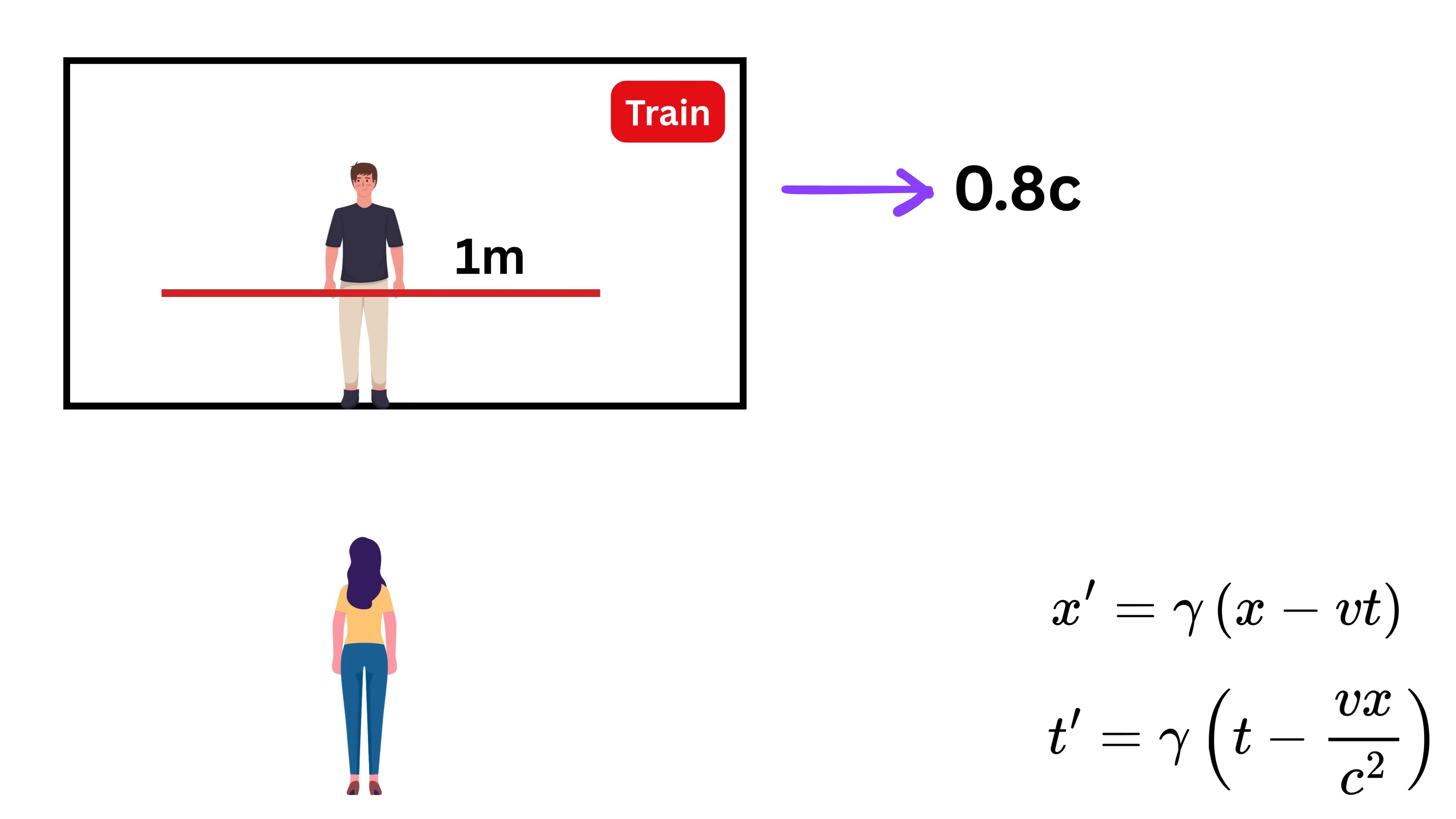But now the whole train with Bob inside is moving to the right at 0.8c relative to Alice, who is standing on the platform. Now Alice sees Bob moving past her and she wants to measure the length of the same pole. But here's the big twist: she will say that Bob's pole is not one meter long. It is something else. But why is that? This is because of the Lorentz transformation.